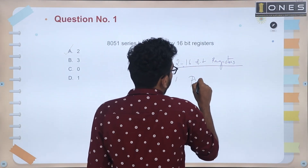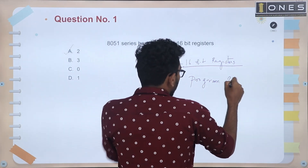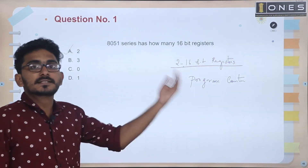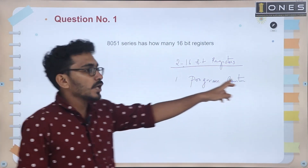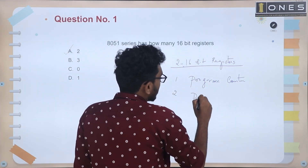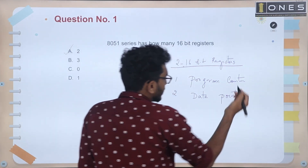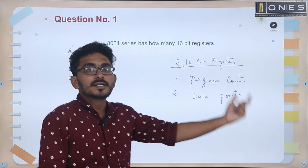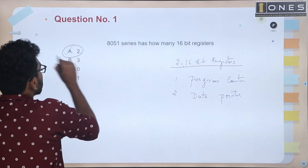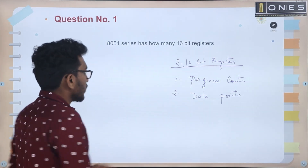The two 16-bit registers are the Program Counter and another register, similar to the 8085. There are 2 sixteen-bit registers in the 8051 microcontroller. Next question.